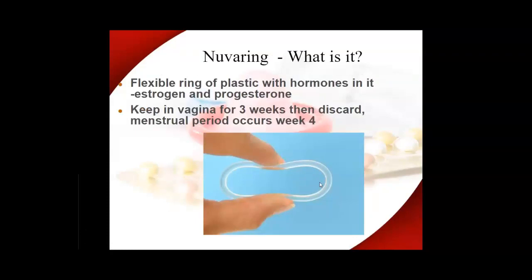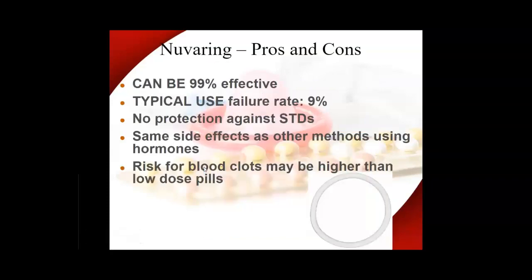The vaginal ring is a flexible ring inserted into the vagina just below the cervix. It releases hormones like the pill and patch but stays in for three weeks — so the patch is for one week, the ring is for three weeks. You don't wear it during your period week, then get a new ring for the next month. It can be 99% effective with a typical failure rate of 9%. It is hormonal, does not protect against STDs, and has the same side effects as other hormonal methods.